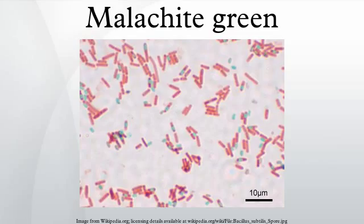Leucomalachite green is used as a detection method for latent blood in forensic science. Hemoglobin catalyzes the reaction between LMG and hydrogen peroxide, converting the colorless LMG into malachite green. Therefore, the appearance of a green color indicates the presence of blood.